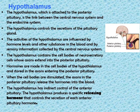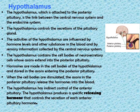However, the hypothalamus has indirect control of the anterior pituitary, meaning it produces a specific releasing hormone that controls the secretion of each anterior pituitary hormone. This means there is no physical contact between the anterior pituitary and the hypothalamus.